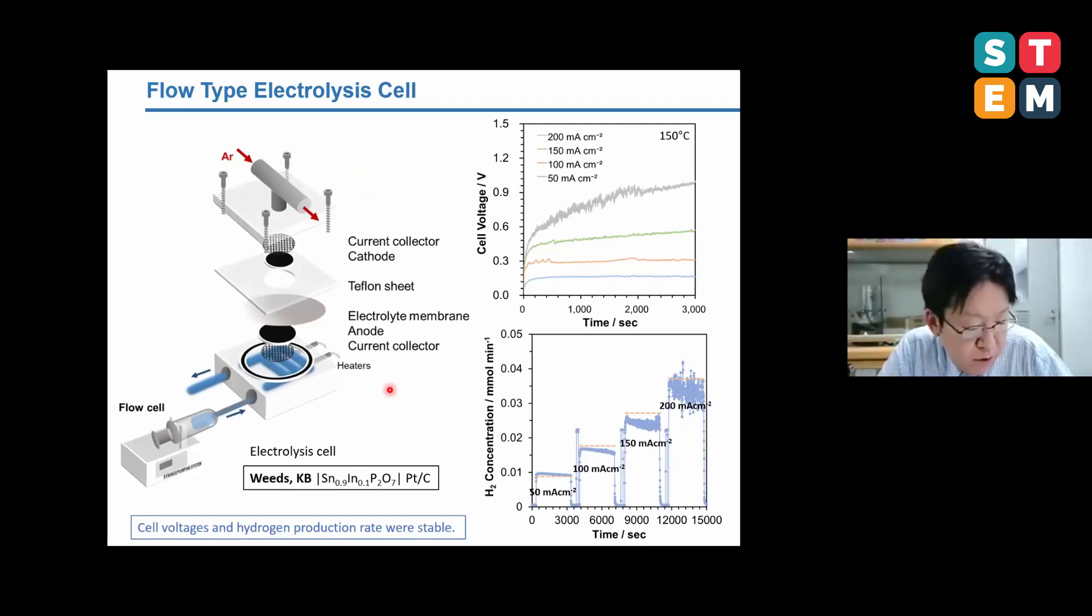Next, in order to confirm that hydrogen can be produced continuously, the flow cell was used for a long time experiment. The cell voltages and hydrogen production rate were stable during constant current operation as shown in these figures.